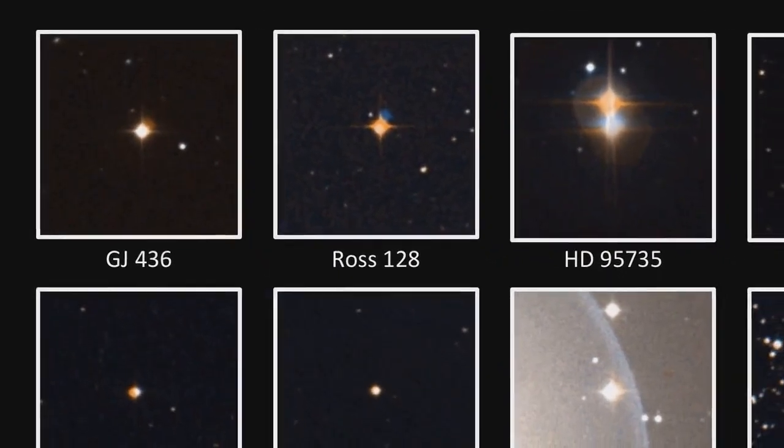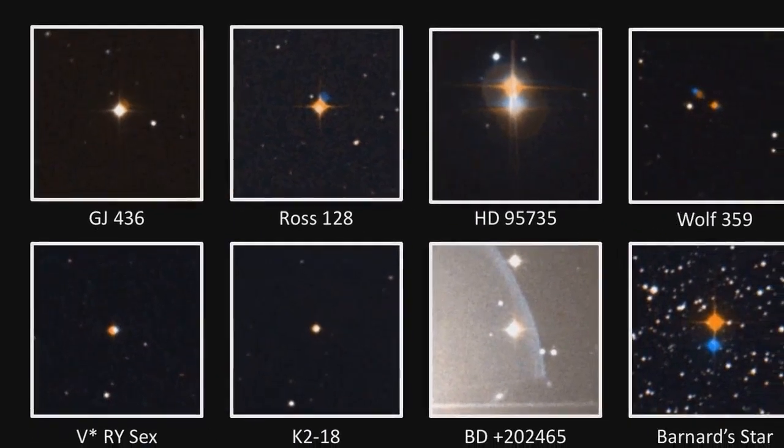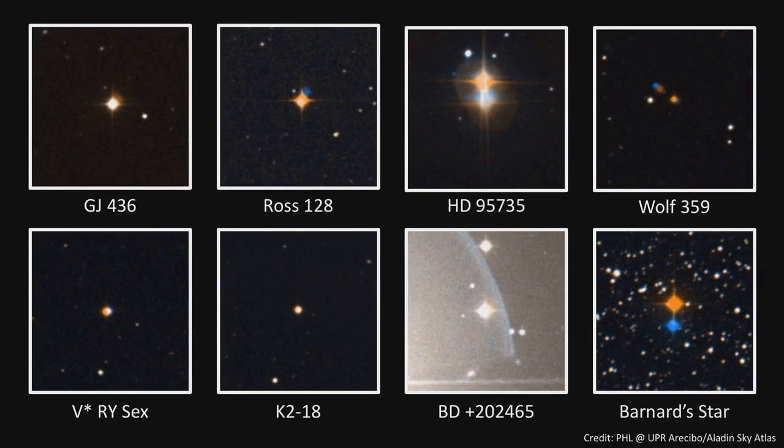There's still uncertainty about whether Ross 128b is within its star's habitable zone, but scientists say that with temperatures of between minus 60 and 20 degrees centigrade, it can be considered temperate.